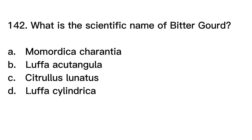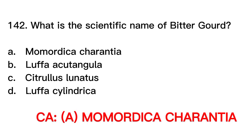Number 142. What is the scientific name of bitter gourd? A. Momordica charantia. B. Luffa acutangula. C. Citrullus lunatus. D. Luffa cylindrica. Correct answer is letter A. Momordica charantia.